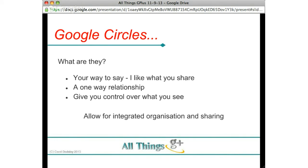Google Circles — what are they? Circles are the equivalent of friends on Facebook, but they are different. When you put somebody into a circle, it's your way of saying: I like what you share, I want to see your information in my news feed. When they put you in a circle, they are saying the same thing.